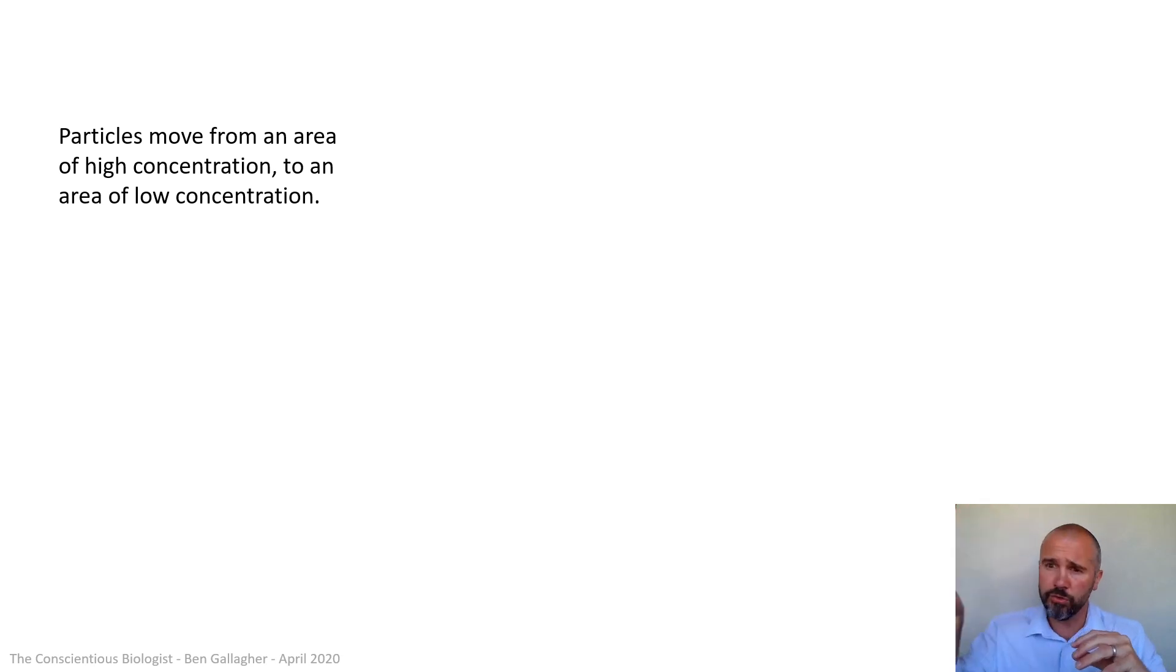So let's start to link that analogy up and start to put some definitions here. So that analogy really covered diffusion. And diffusion is where particles, instead of people, move from an area of high concentration to an area of low concentration. So in the analogy, the people were at high concentration in the corner, they didn't want to be. So they spread out into the low concentration, there were no people in the room, so low concentration people in the room, they spread out from high to low. In other words, they spread out to find a bit of space.